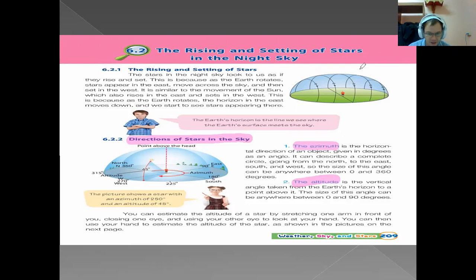We have the azimuth, and we have the altitude. So the azimuth is the horizontal direction of an object given in degrees as an angle. It can be described as a complete circle going from the north to the east. Do you think the sun is rotating around the Earth? No. The sun does not rotate around the Earth. We rotate around the sun. We are the one that is moving. Why are we moving? Because of the gravity that the sun gives us.